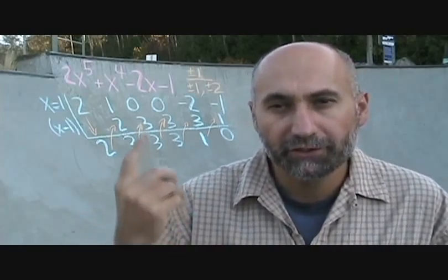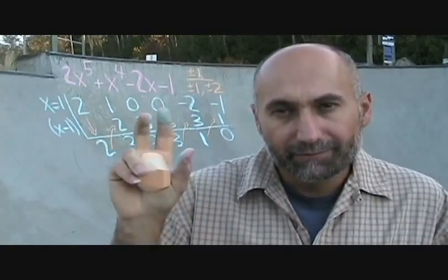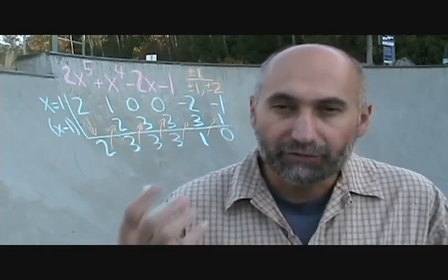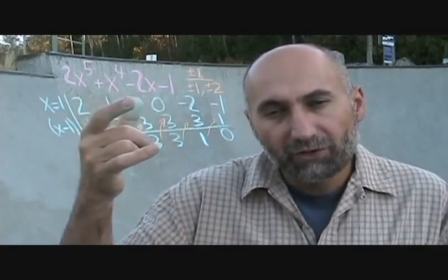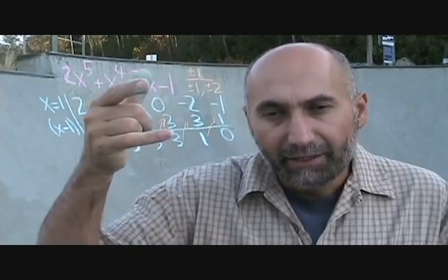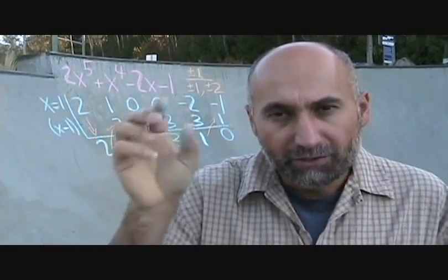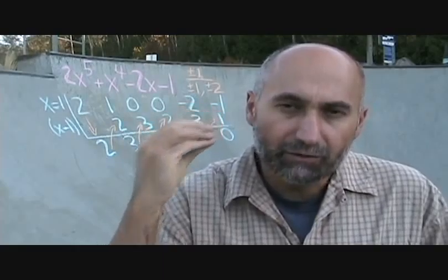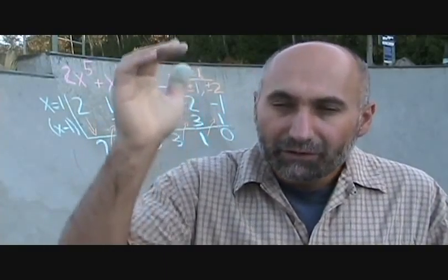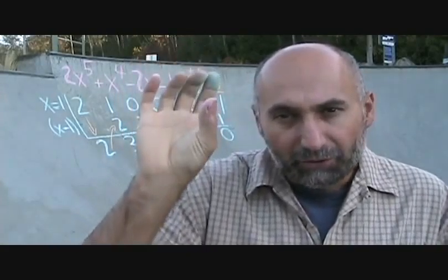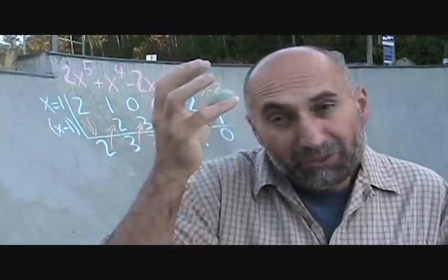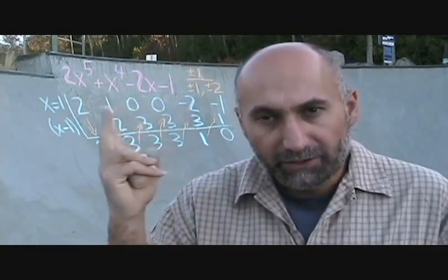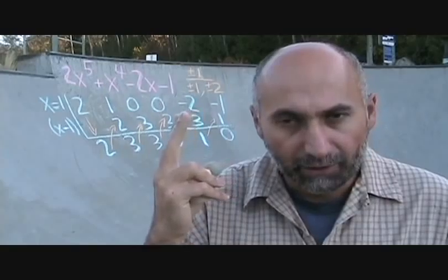When doing polynomial long division, we put placeholders in for missing terms. For polynomial long division you don't strictly have to, but it helps prevent mistakes. The key rule is you can only add like terms — you can't add terms with different powers. We still put placeholders here just to line everything up and keep everything in descending order.